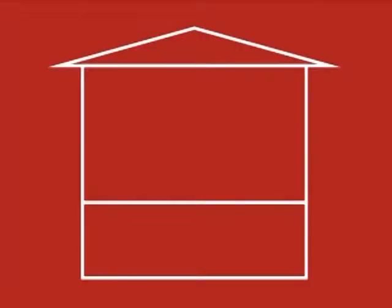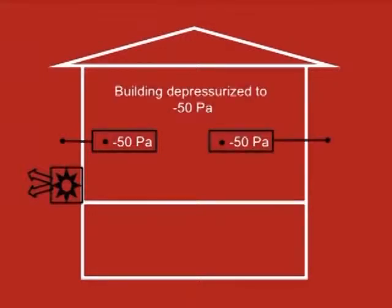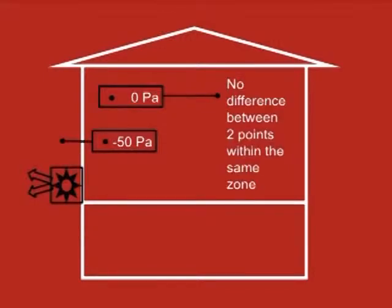Let's look at a very simple building. It is a single room, single story home with a crawl space and a cold attic. Depressurizing the building to minus 50 pascals results in a 50 pascal pressure difference across the building's exterior walls. If we measure the pressure difference between two places within the single room, the pressure difference should be zero.